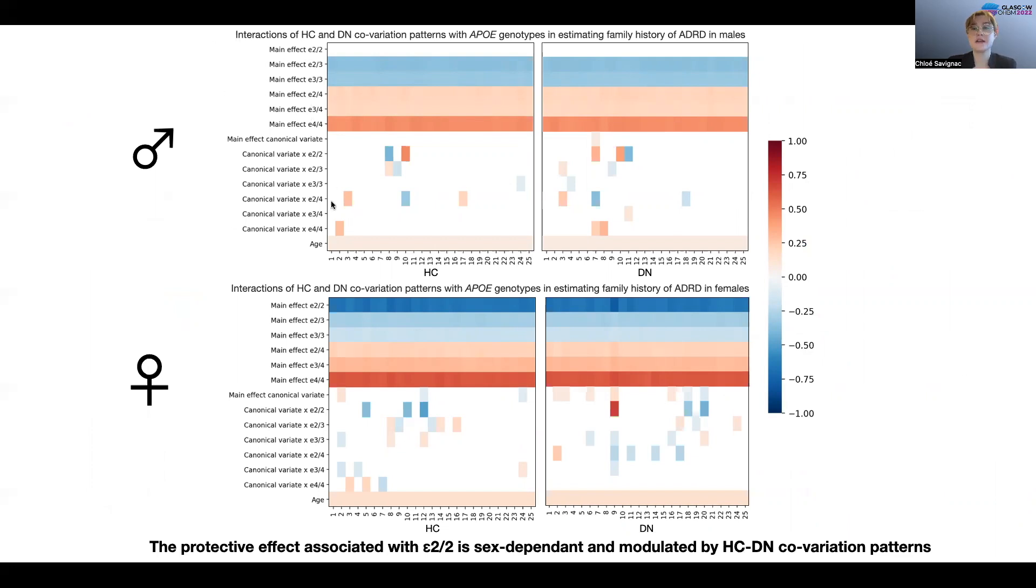So we looked at the main effect of each of the six APOE genotypes, the main effect of a given hippocampus or default network pattern for each of the 25 modes, and six interaction terms for the interaction of each of the six APOE genotypes and the given hippocampus or default network pattern being investigated, controlling for age.